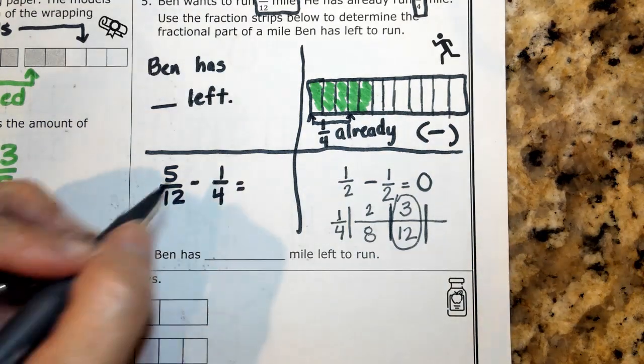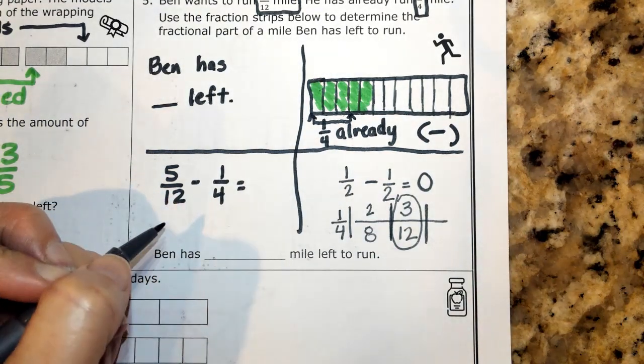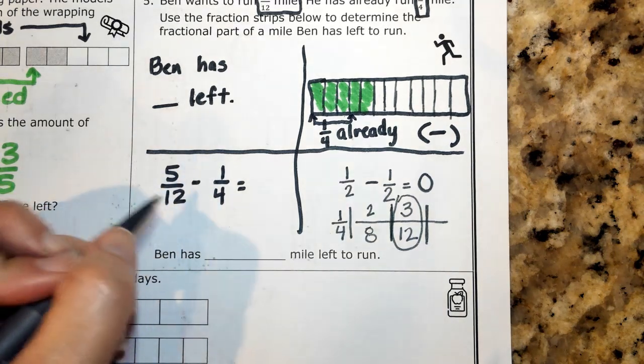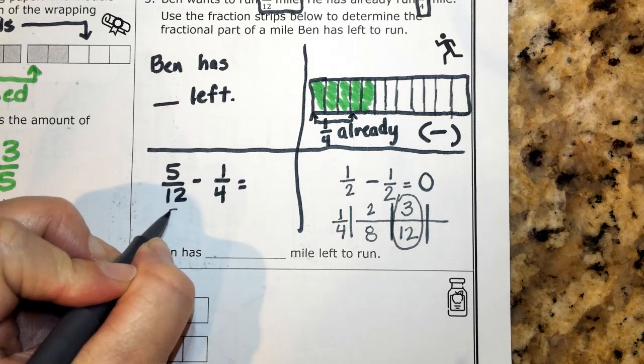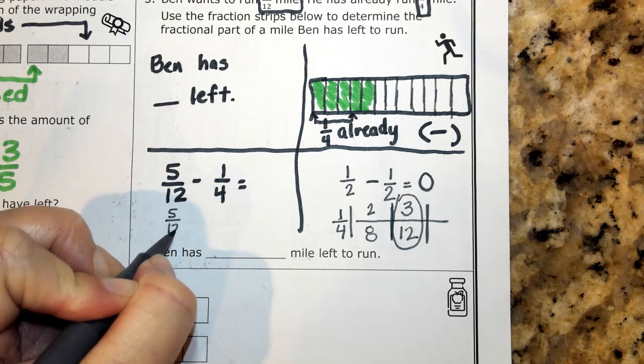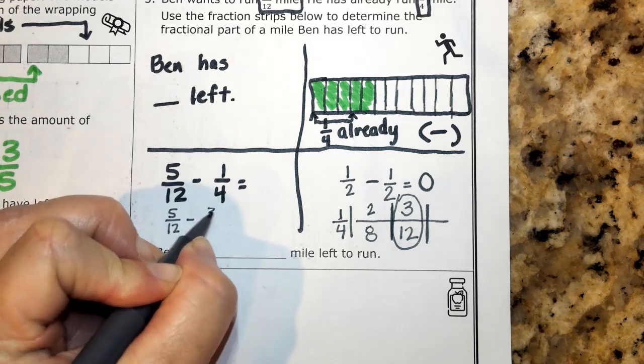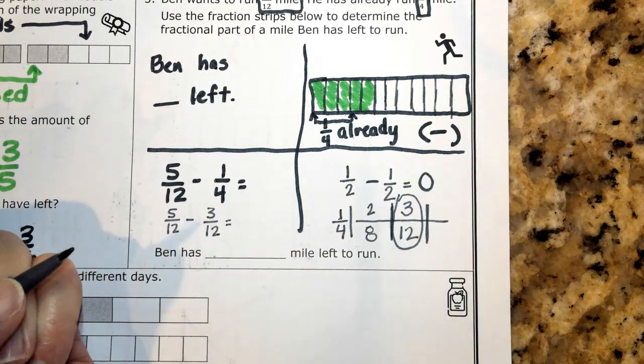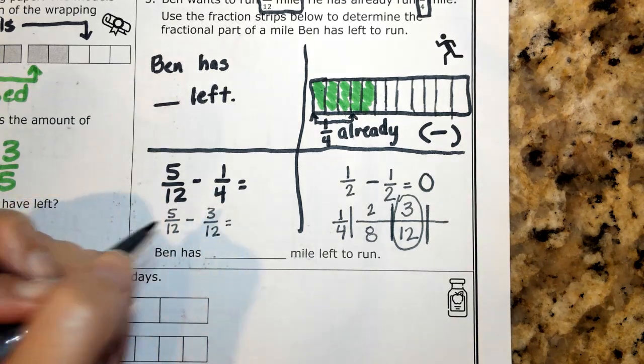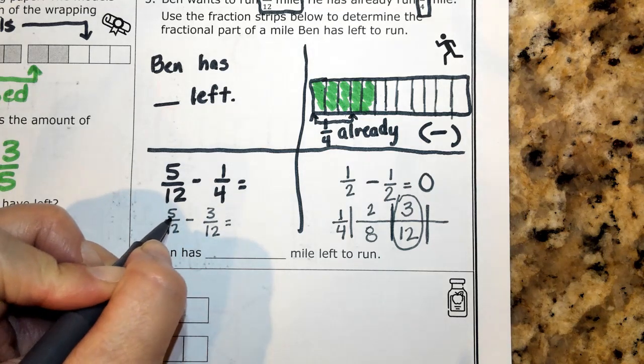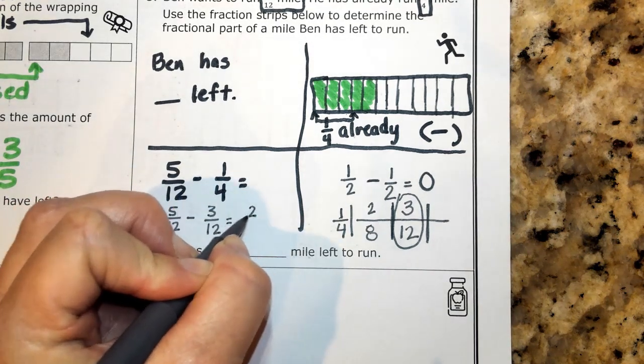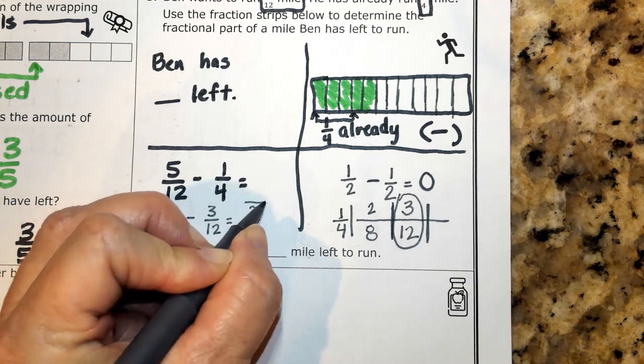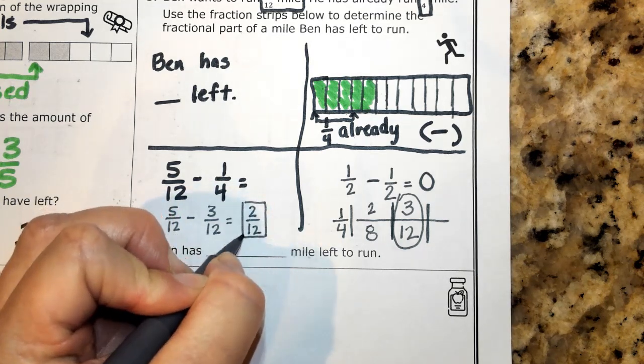So I'm going to write that information right below. Remember boys and girls, when I did this earlier, I didn't have enough room underneath, but now I do. Five twelfths minus three twelfths. And now that I have it rewritten, I can simply subtract my numerators to get two. And remember my denominator stays the same because it represents how many equal pieces are in the whole.